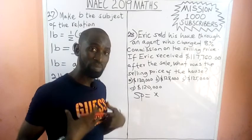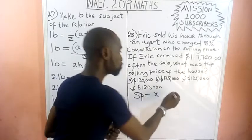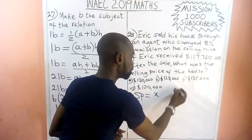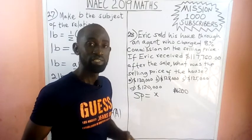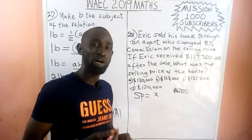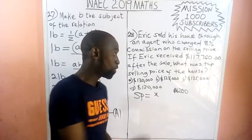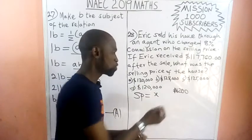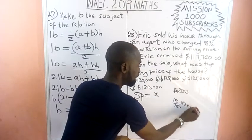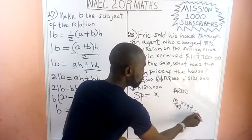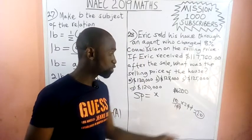Let's assume I want to sell my house for $200, so the selling price is $200. I give it to an agent who collects 10% commission. That means 10% of $200 gives us $20. So the agent will collect $20.